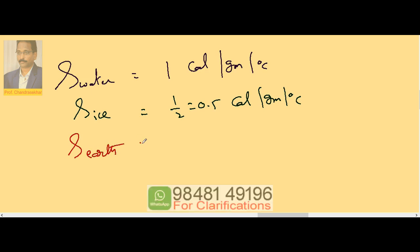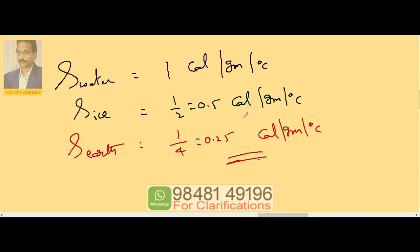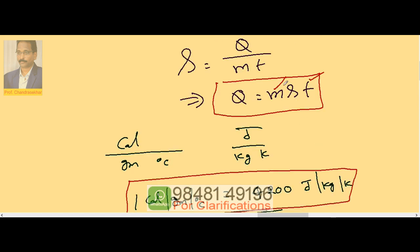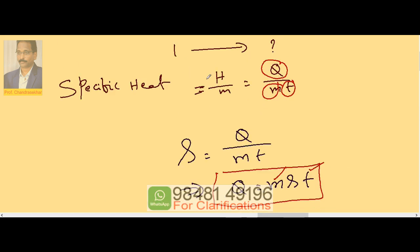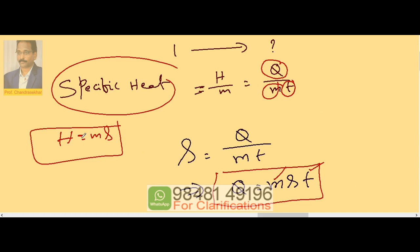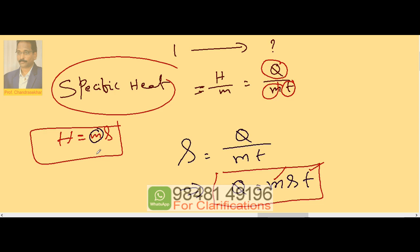The specific heat of steam is 1/4 or 0.25 calorie per gram per degree centigrade. Specific heat depends on the nature of the material — once you change the material, the value changes automatically. It is independent of mass. Heat capacity, on the other hand, depends on mass, because H equals M times S. So as mass changes, heat capacity changes automatically.